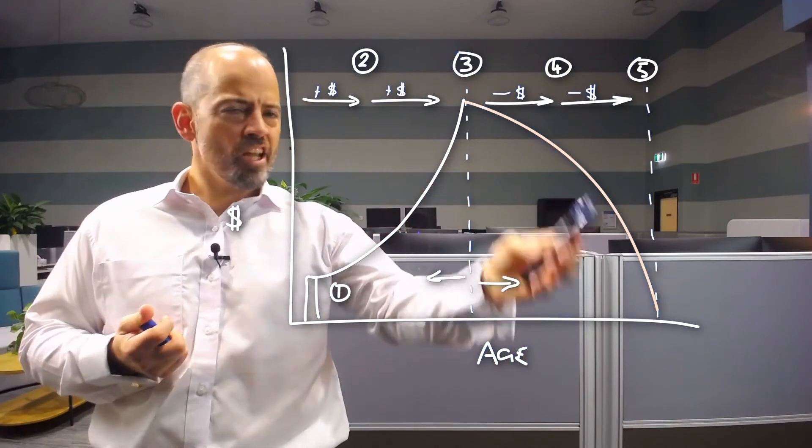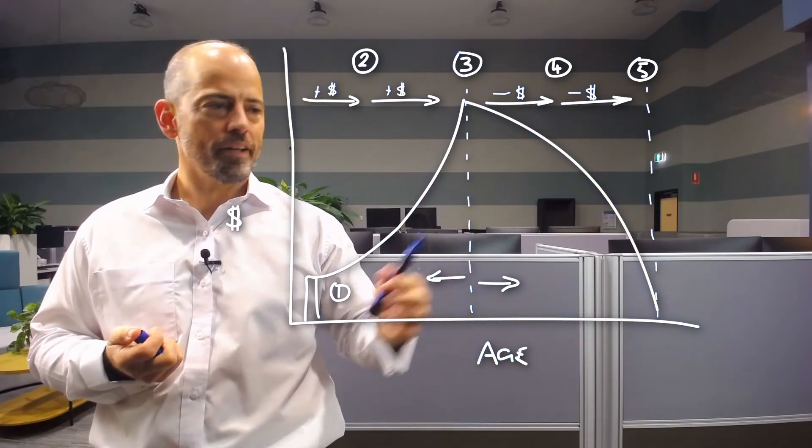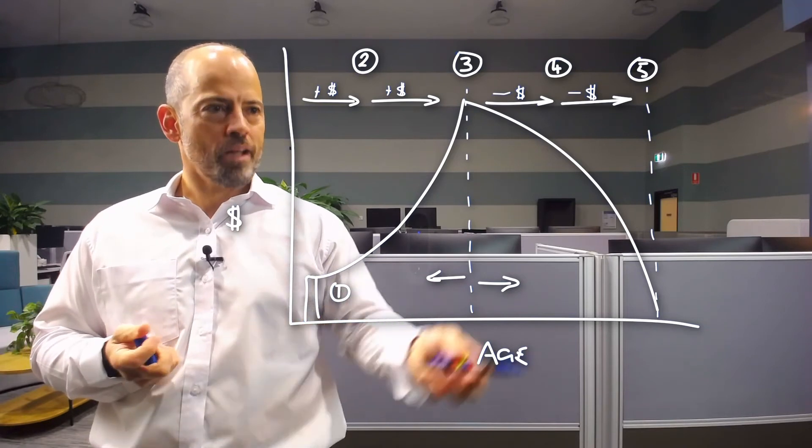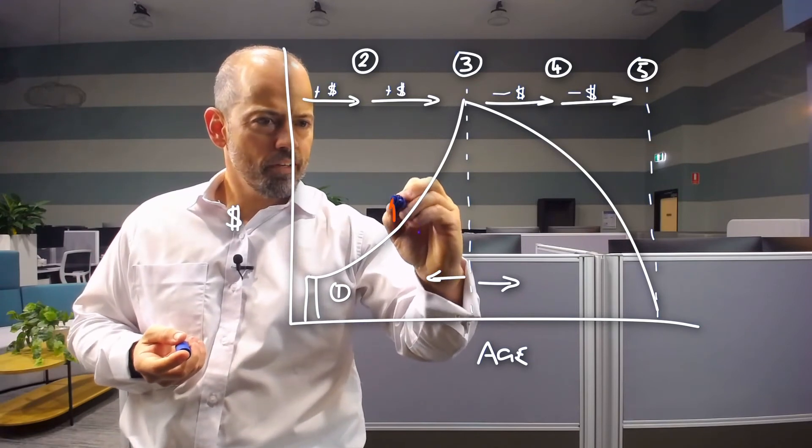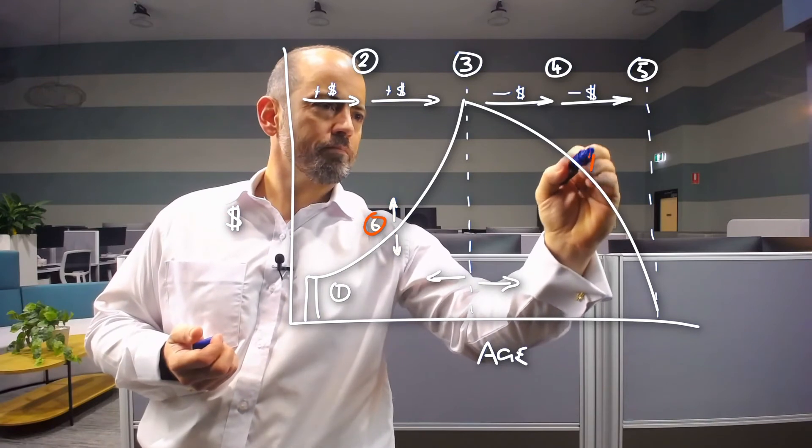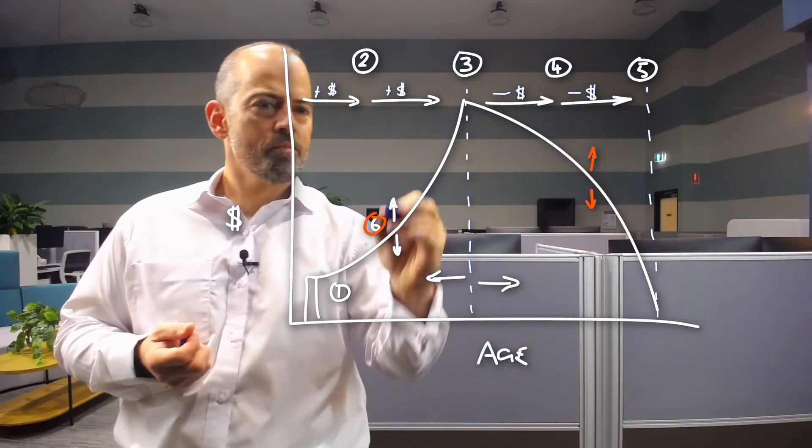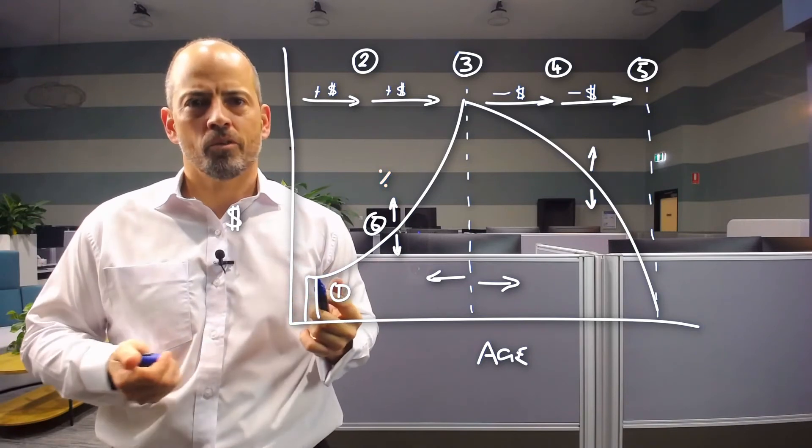But between variables four and five, you can then understand what the drawdown rate, what the income that you're going to need to draw down over time to fund that lifestyle once you stop work or slow down becomes able to calculate. Then we move on to the sixth and final variable, which most people have trouble with, and that is at what earning rate do I need my capital to work at to be able to fund all of my goals in my lifetime?